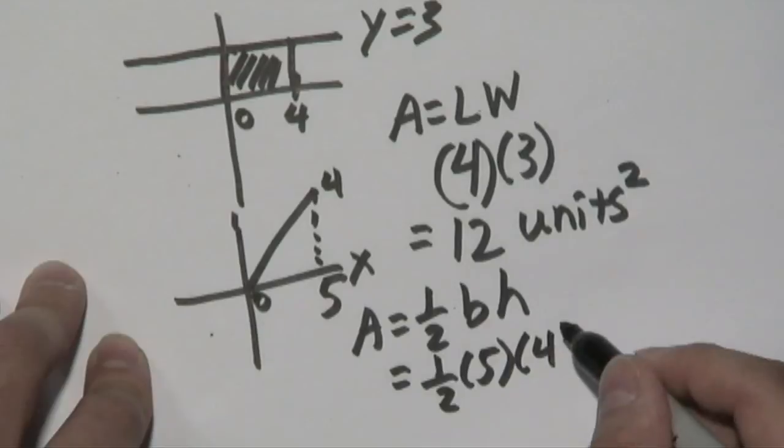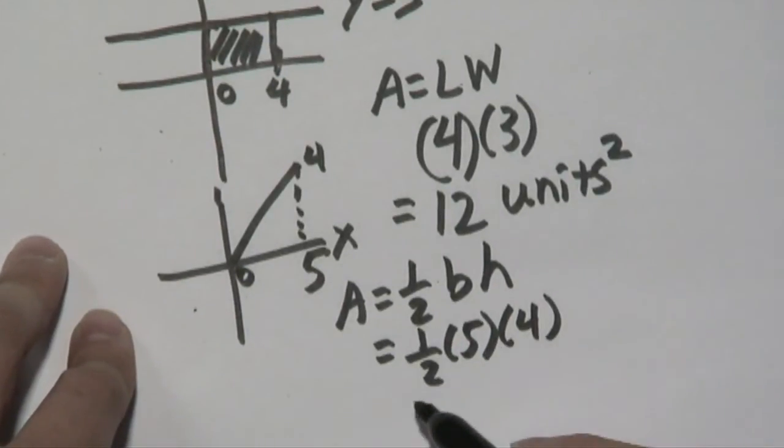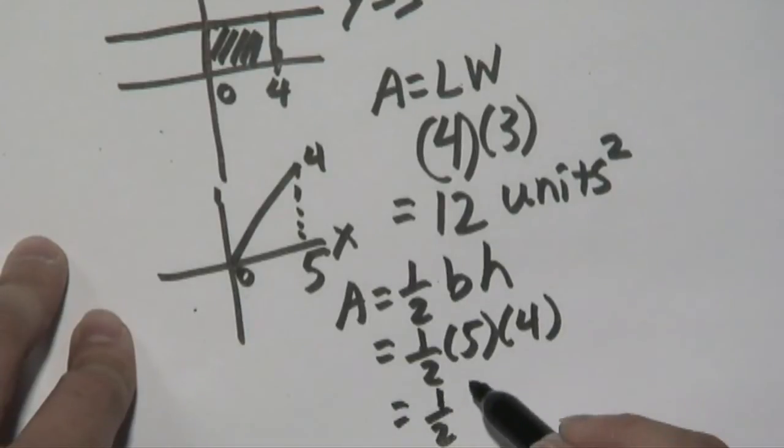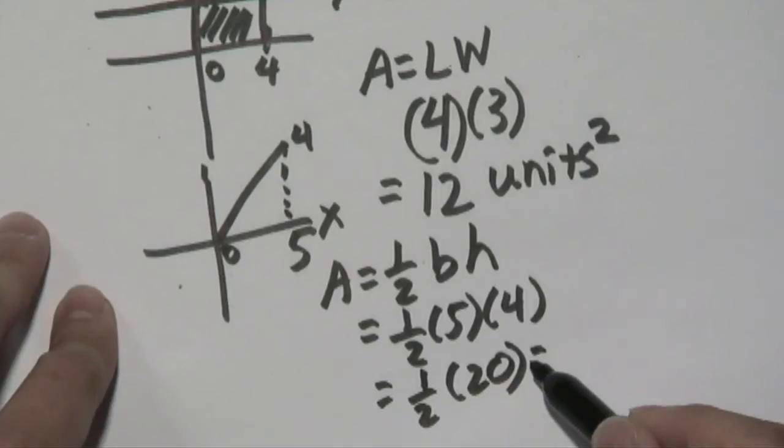So, your height is 4 units long, and what you want to do is simply find out what 5 times 4 is, which as you know is 20. And, of course, you know half of 20 is going to give you 10.